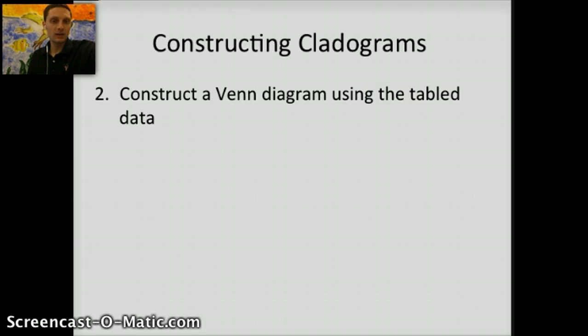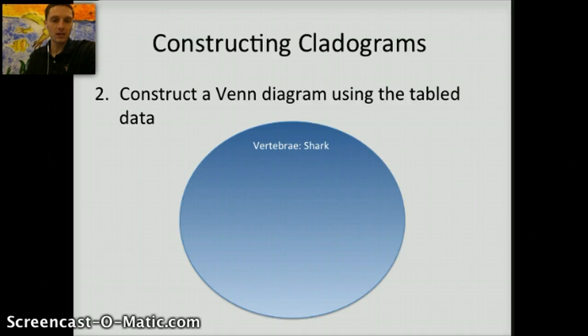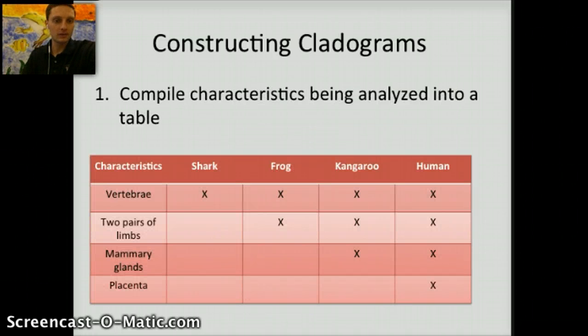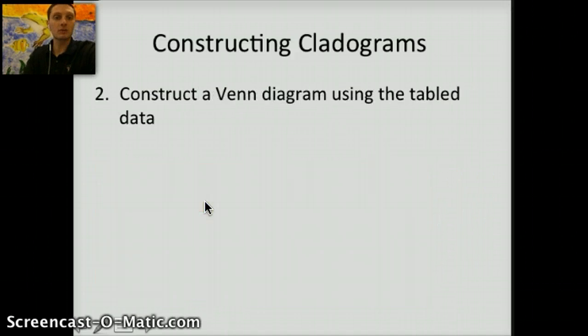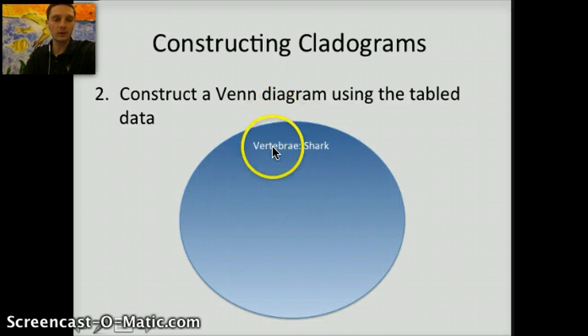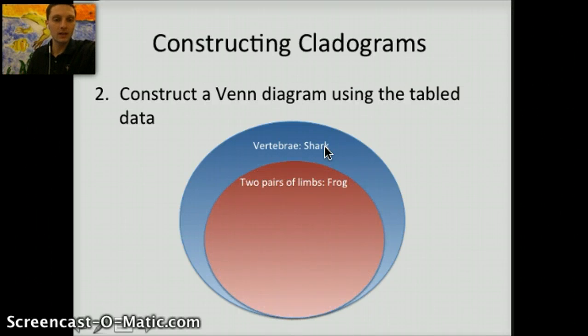The second task is to construct a Venn diagram using the tabled data. When I say Venn diagram, we're not going to do the traditional three circles on top of each other, but we're actually going to stack circles on top of one another. We're going to start with the characteristic that's shared by all of the taxa in the group, and then work inwards. For example, looking at our table, the one characteristic that all four species have in common is that they have vertebrae. So we're going to start with that in our Venn diagram. We've got vertebrae, I list that here, and then I write shark. If we move farther in, we're getting more specific, and now the frog has two pairs of limbs, and any other species inside this circle will also have two pairs of limbs.